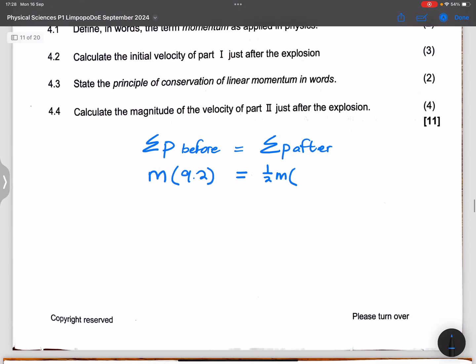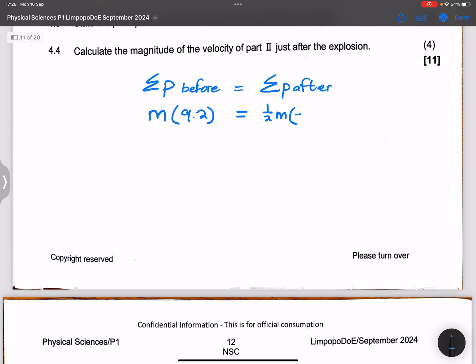And we know that part one went upwards, and we said the velocity of part one is negative 16.39, so that's minus 16.39.